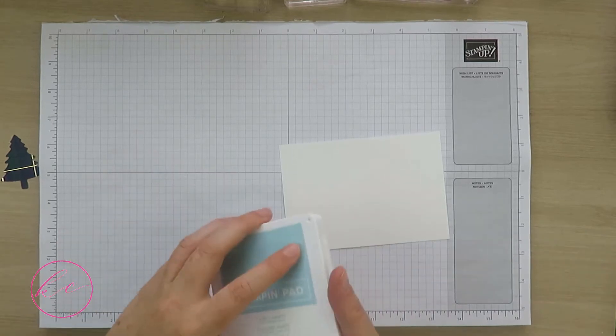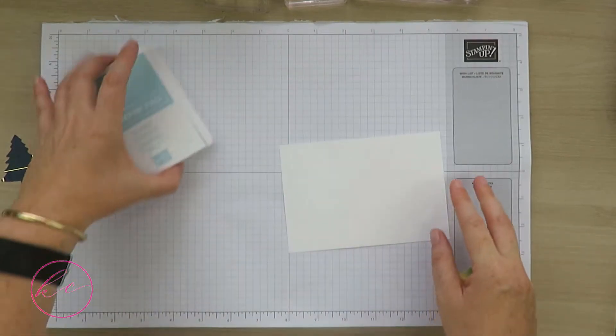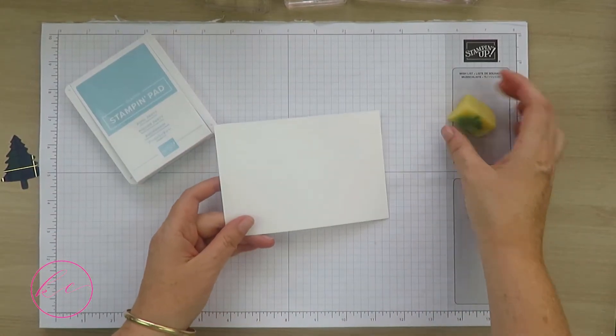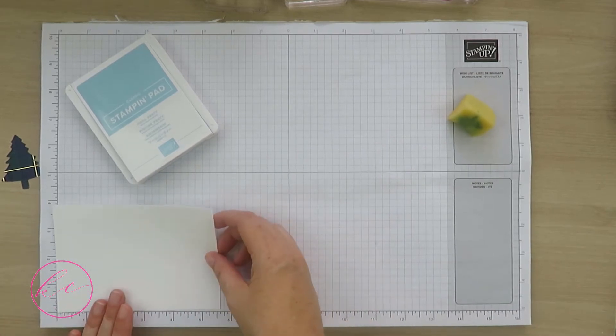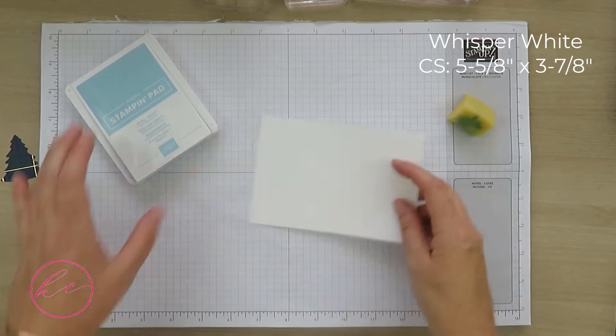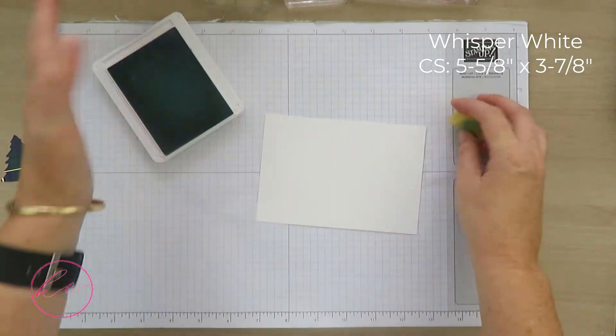Hi everyone, welcome to our next video tutorial. I have a piece of Whisper White cardstock that measures five and five-eighths by three and seven-eighths of an inch. What I want to do with my